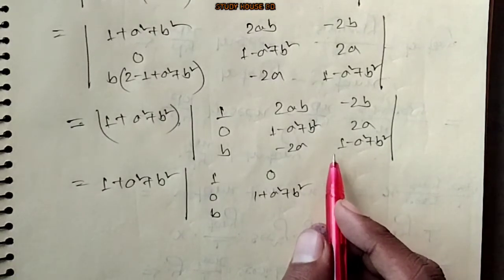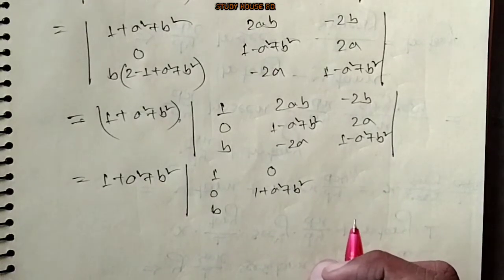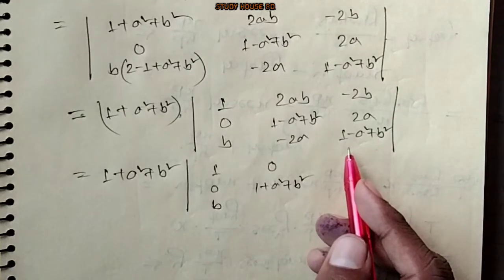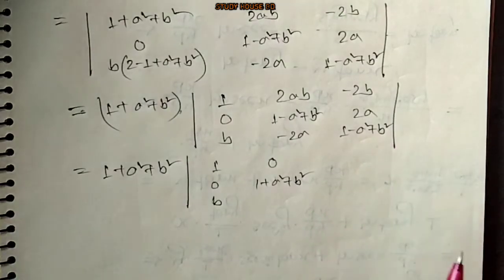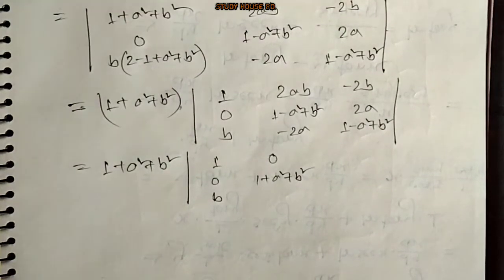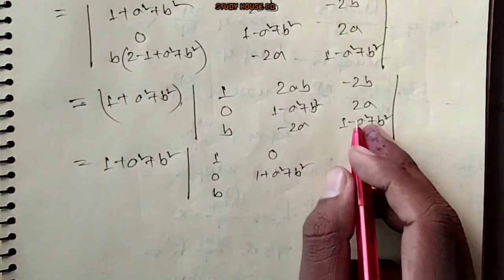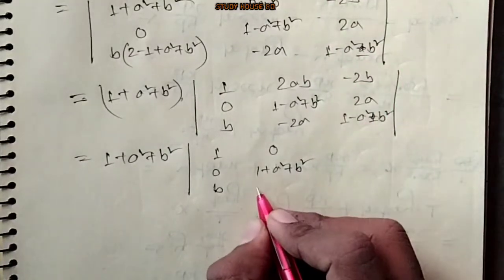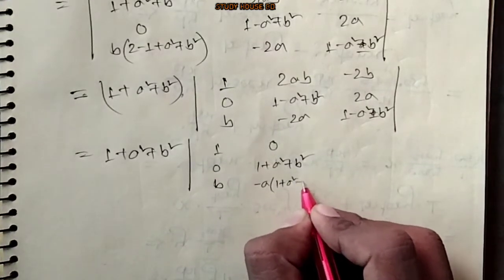Okay. Yes, it is. Take a look at the same thing. Let me take a look at the same thing. Now I have to do this. So we will do this again. Minus a common: 1 plus a squared plus b squared.